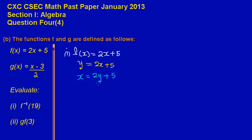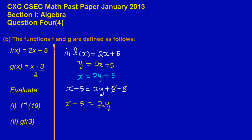The next step is to make y the subject of the equation. Since 5 is being added, I'm going to subtract 5 from both sides. So I'll have x minus 5 is equal to 2y plus 5, minus 5. Positive and negative 5 cancel out, leaving x minus 5 is equal to 2y. Since 2 is multiplying y, I must do the opposite — division — so I divide both sides by 2. 2 will cancel out with 2.